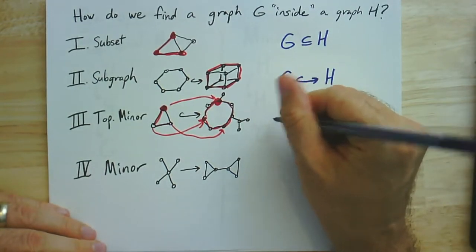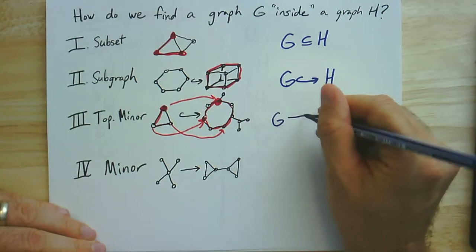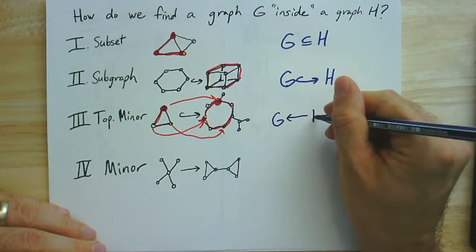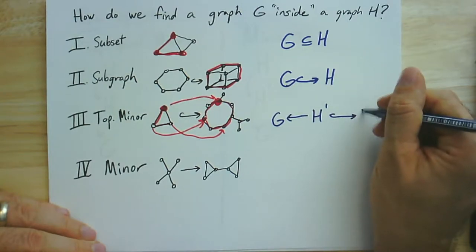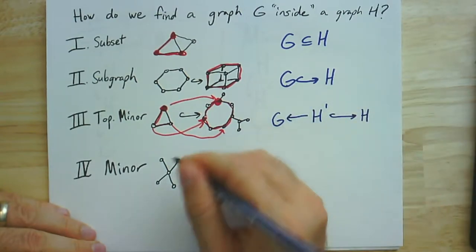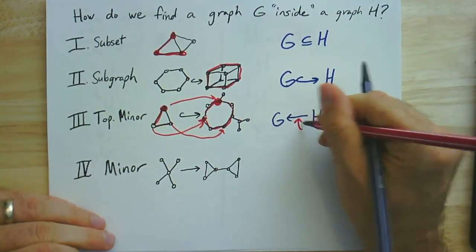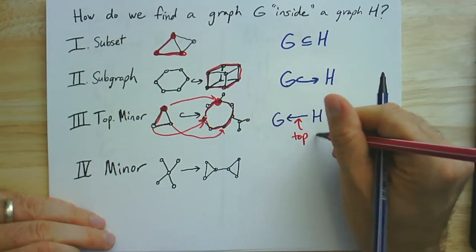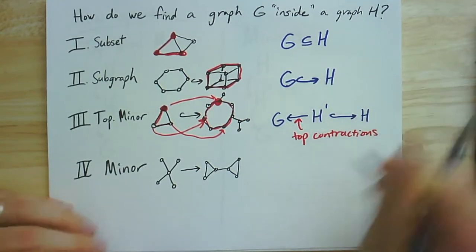This might also be expressed in terms of some kinds of simplicial maps, where there's some H prime subgraph of H that contracts to G. And this has to be a topological contraction. That's contracting the paths to edges that are not already in the graph.